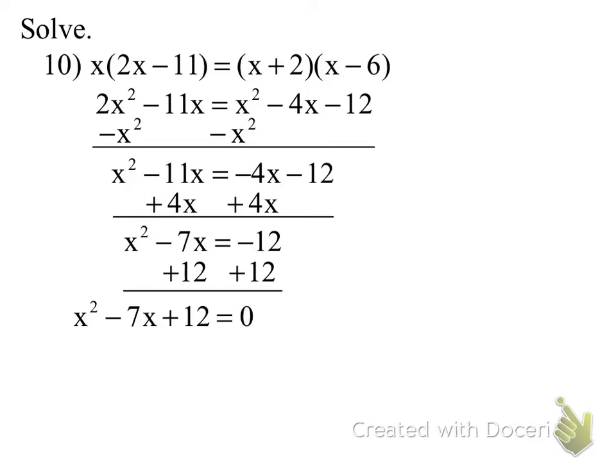And now we are left with, what is this factor to? Sam? X minus 3 times X minus 4. X minus 3 times X minus 4. And my solutions are X is equal to 3 and X is equal to 4. Are there any questions?